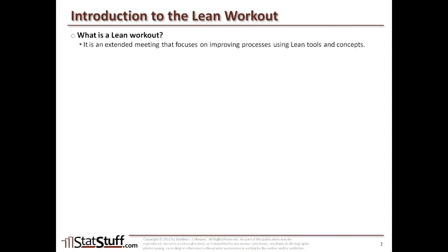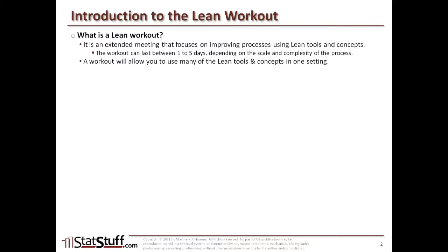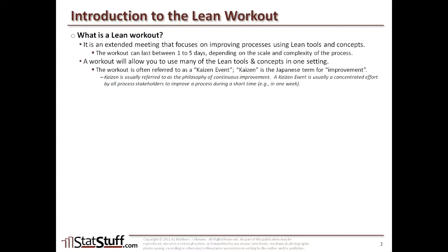A lean workout is an extended meeting that lasts over several days, focused on trying to improve the process using a lot of the lean tools and concepts. It can last anywhere from one to five days, and the length really depends on the scale or complexity of the process you're trying to improve. A workout allows you to use many different types of lean tools and concepts all within one setting. The workout is often referred to as a Kaizen event. Kaizen is the Japanese term for improvement and is usually referred to as the philosophy of doing continuous improvement. A Kaizen event is that one concentrated effort where all the process stakeholders get together to try to improve the process within a short period of time.